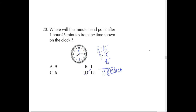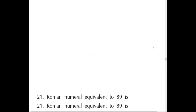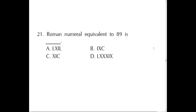Question number 21 asks for the Roman numeral equivalent of 89. L is 50, X is 10, so L + XXX + IX = 89. LXXXIX is the correct answer, which is option D.